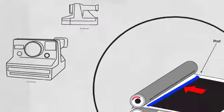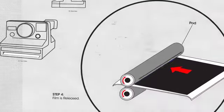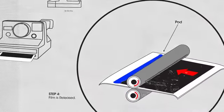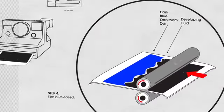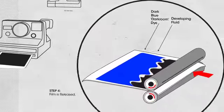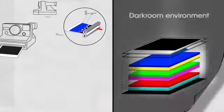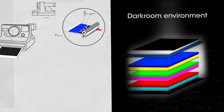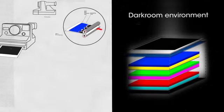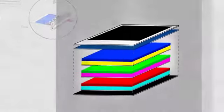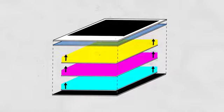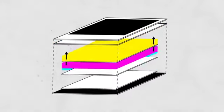The next thing that happens is the film pops out of the camera. It passes through rollers and there's a pod at the bottom of the picture frame which contains a developing fluid and a dark blue dye to provide a darkroom environment. Those dyes, when they come in contact with the developing fluid, are able to migrate from the negative to the top part of the picture where they can be seen.